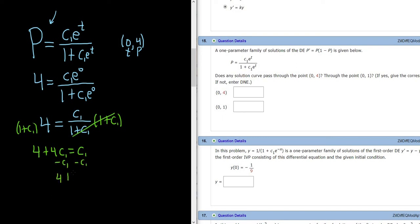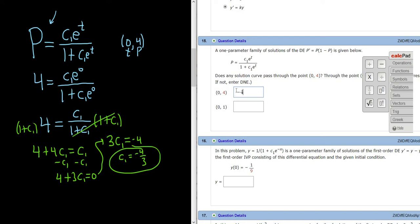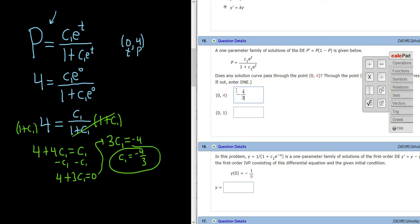Then we can subtract the 4. So we have 3C1 equals negative 4, and so C1 is equal to negative 4 over 3. So that should be the answer to the first one. So yes, it does pass through (0,4) because we get an answer for C1.